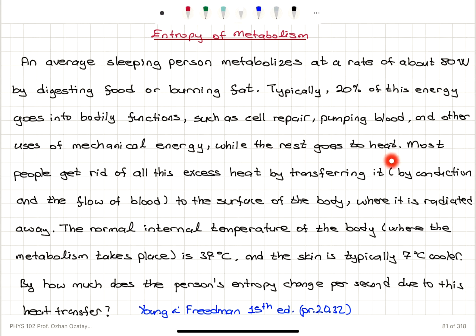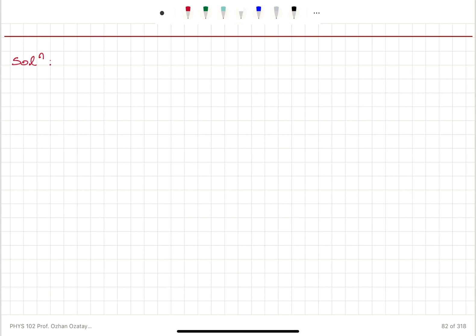While the rest goes to heat. Most people get rid of all this excess heat by transferring it, by conduction and the flow of blood, to the surface of the body where it is radiated away. The normal internal temperature of the body where the metabolism takes place is 37 degrees Celsius and the skin is typically 7 degrees Celsius cooler. By how much does the person's entropy change per second due to this heat transfer?